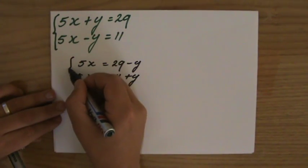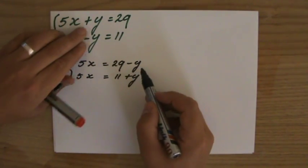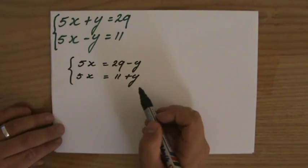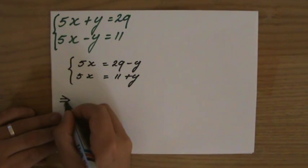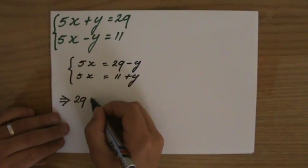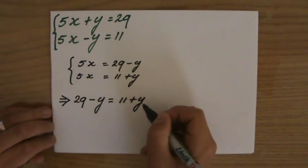So this is the first equation. 5x is 29 minus y. 5x is 11 plus y. Then I can make the conclusion that 29 minus y has to be the same as 11 plus y.